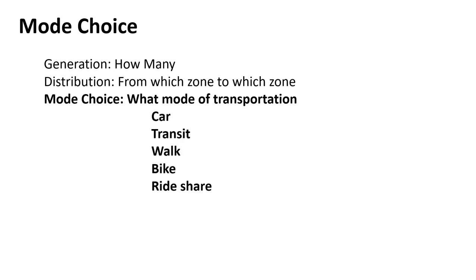Modes can be a lot of things — car, transit, walking, biking, ride share. We typically don't model all of those in larger models because that adds extra complexity and takes a lot more computing time.